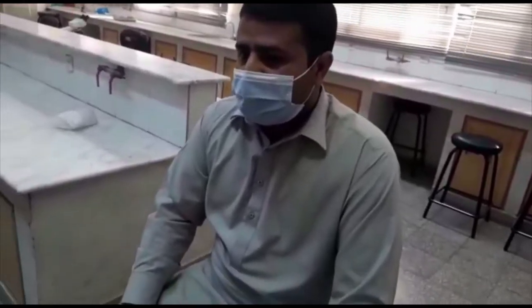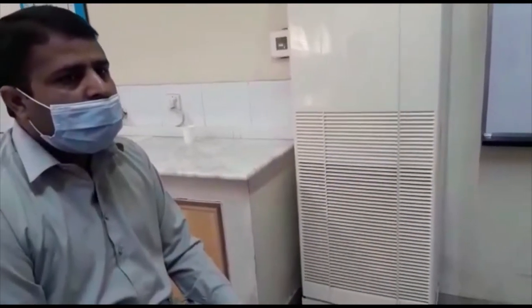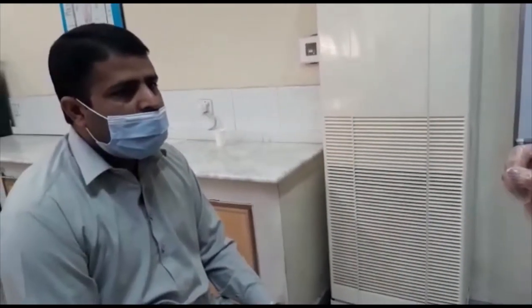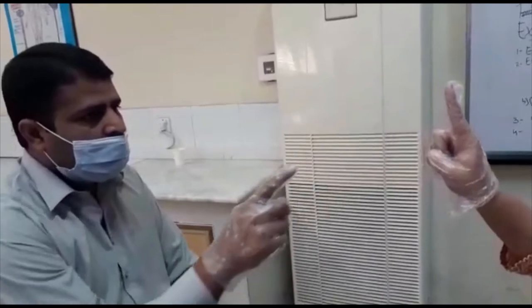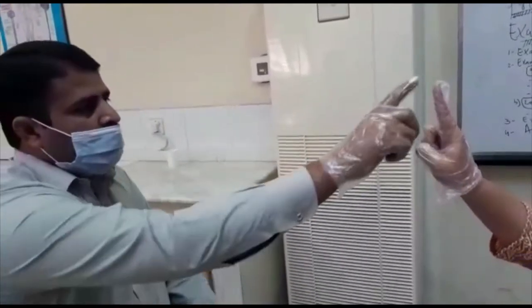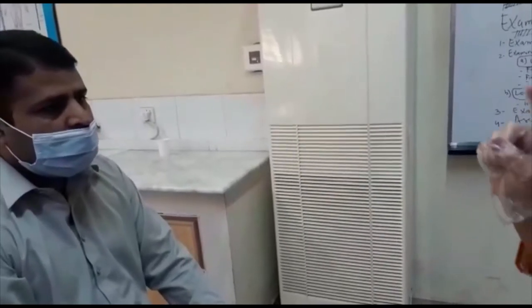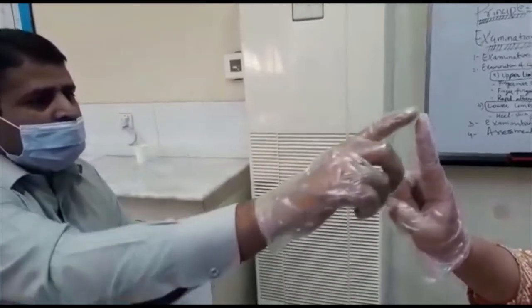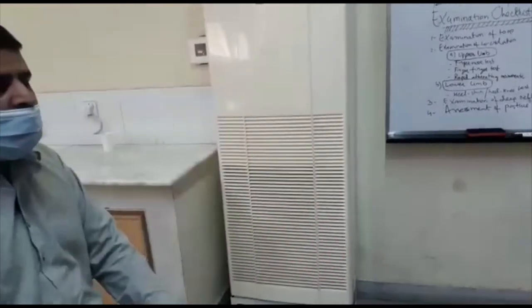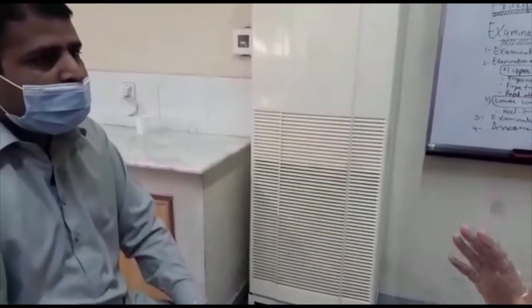The first test is the finger-nose test. I will ask the patient to first touch his index finger to his nose, and then touch his index finger to my index finger. After performing the finger-nose and finger-finger tests, we are checking for past-pointing — basically overshooting or undershooting movements.